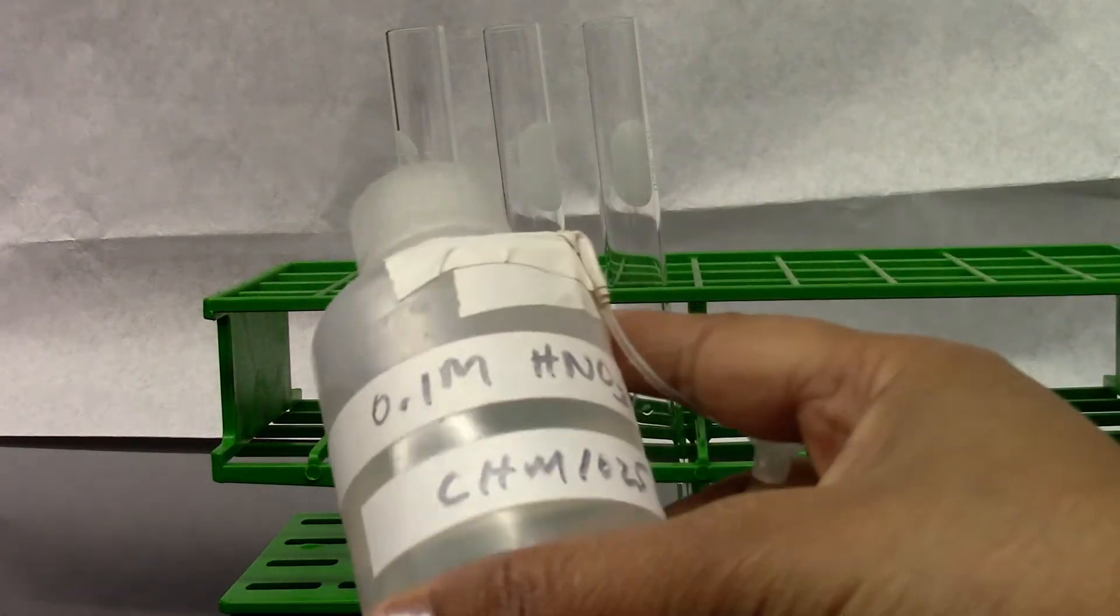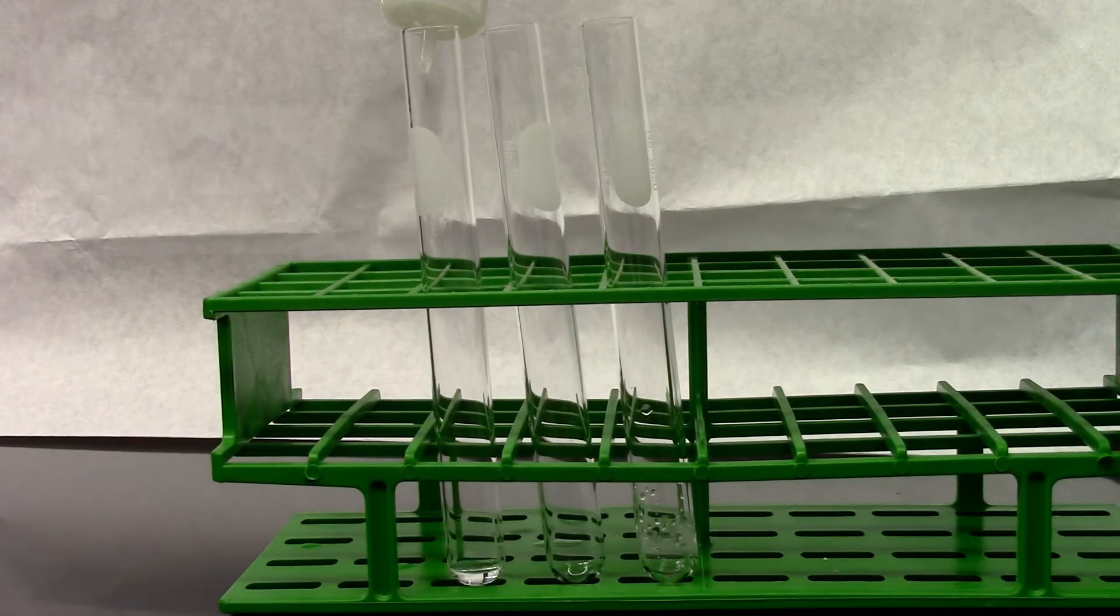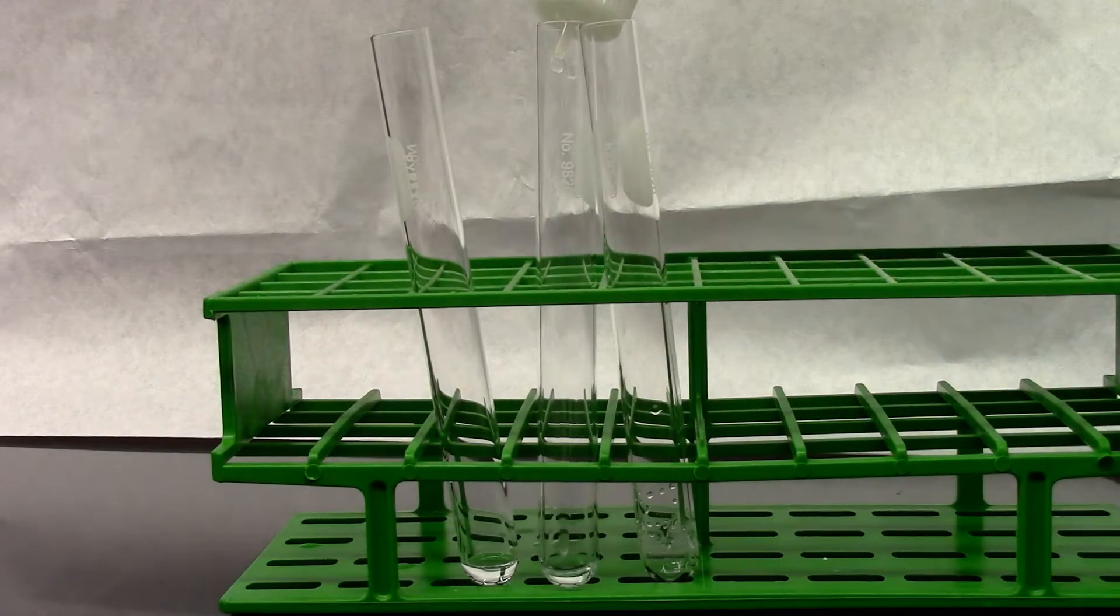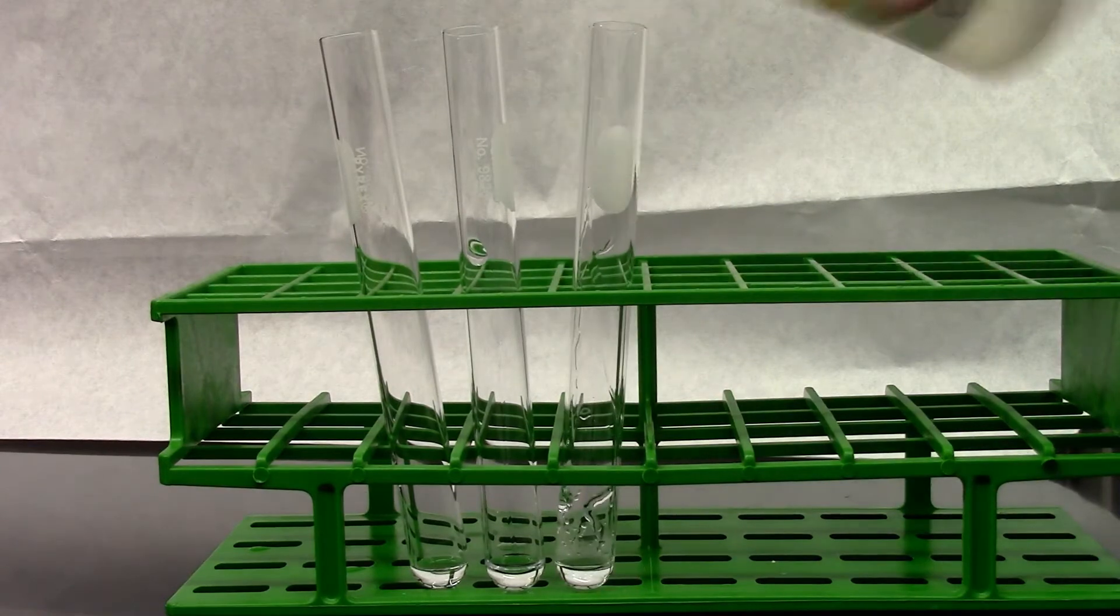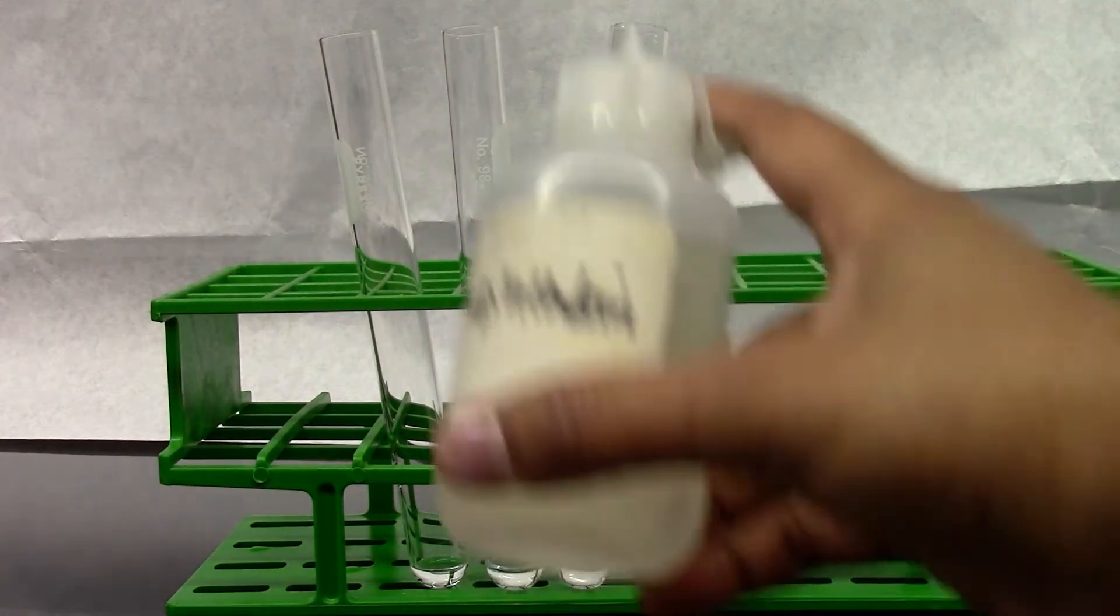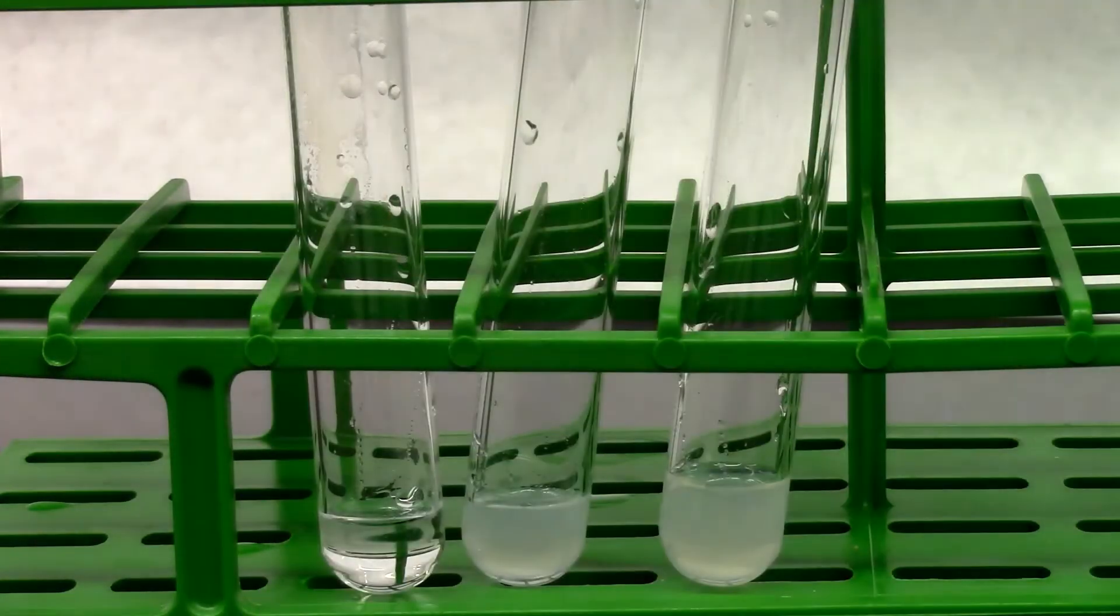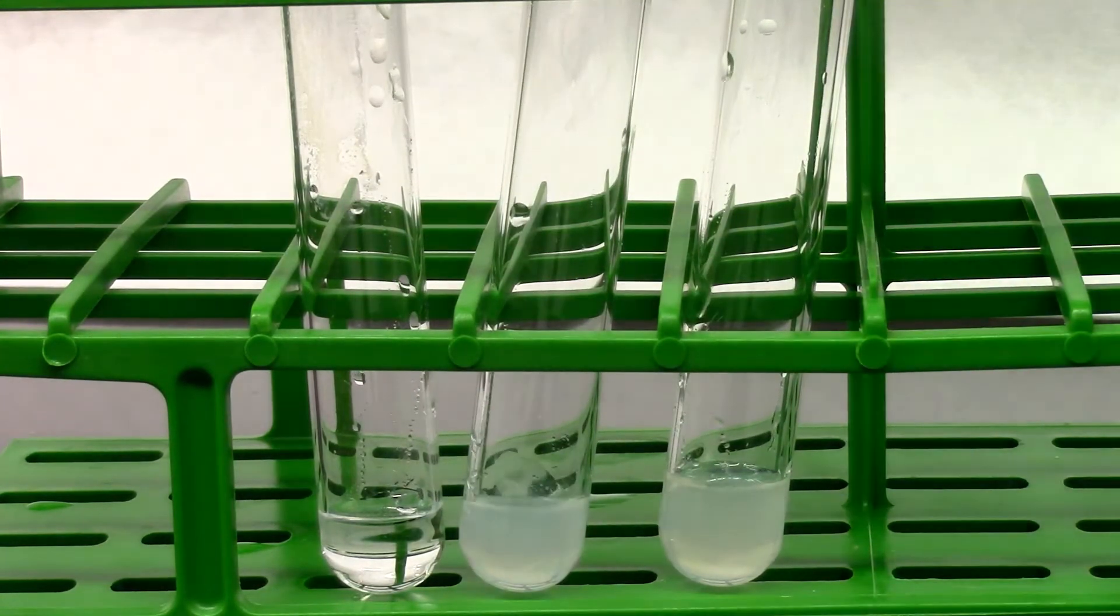At three test tubes I'm going to add 10 drops of nitric acid on the first one. 10 drops of sulfuric acid in the second one. And 10 drops of phosphoric acid in the third one. I'm going to add one drop of phenolphthalein which is an acid based indicator. Now I'm going to add sodium hydroxide drop wise until there's a permanent color change. So it's an acid based neutralization reaction.